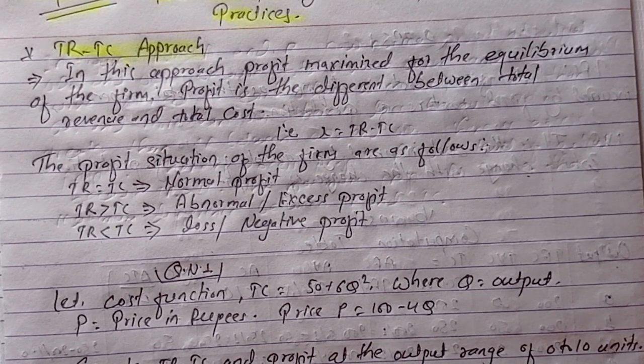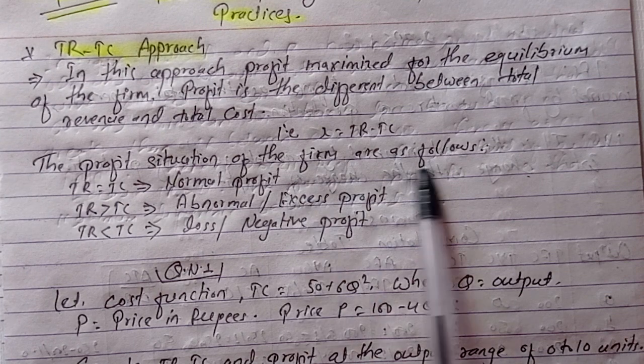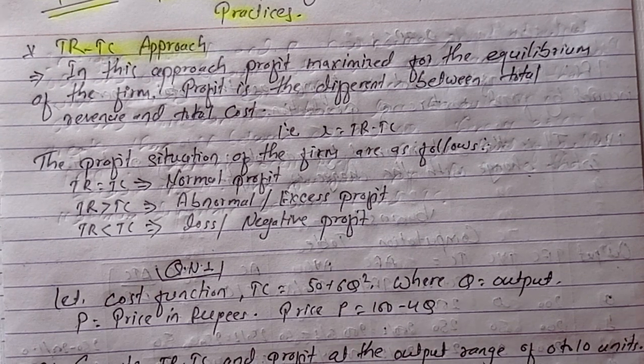We are going to take a look at the profit situation of the firm. In this case, TR minus TC is equal to normal profit.